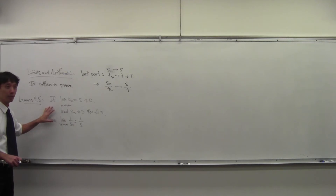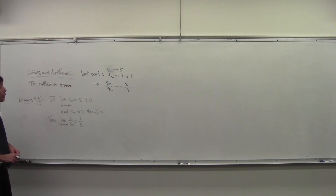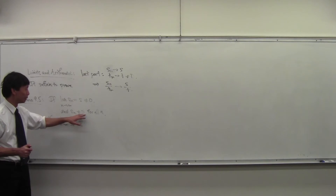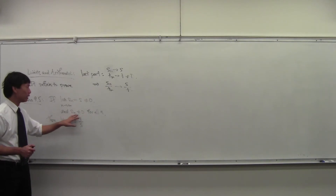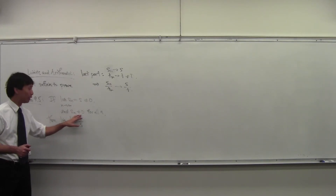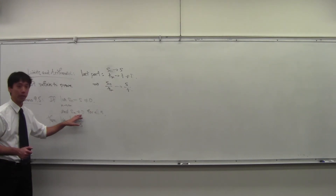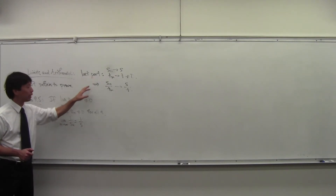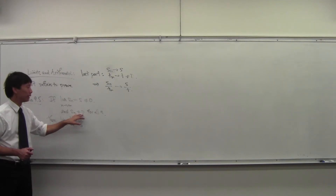Okay, everybody all right with that? Marco: Why doesn't the top one have the condition that t_n cannot be zero for all n? Yeah, great. I was thinking to say something about that. So how come we're allowed to assume this seemingly strong statement that s_n is non-zero for all n down here, but in the upper one we don't say that? Why does it not matter?